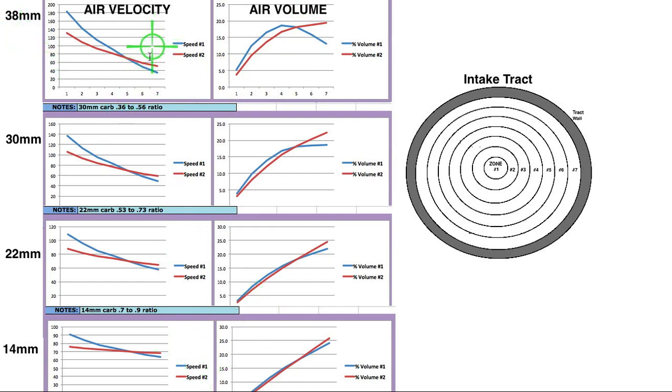But all of these carburetors, this is interesting. The variation from the outer to the inner zone, the variation in air velocity, which as you already now know, the air velocity affects the atomization. The variation becomes less because before you had a bigger difference from outer to inner. Now you have less of a difference from outer to inner. How is that going to affect power?